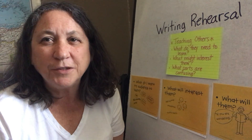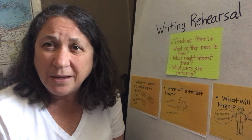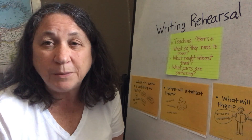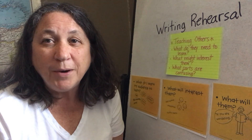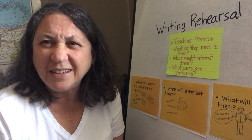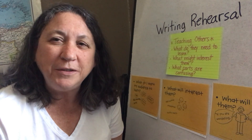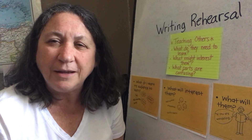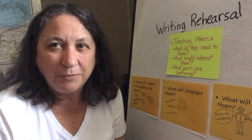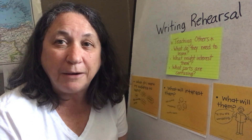Tell it to somebody. If there's an adult that will listen, that would be awesome, or an older friend or an older sibling. But if not, then tell it to your dog or tell it to your stuffy. You've done this all year long. It's really important to find somebody you can talk to about your writing so that you can plan it out loud.